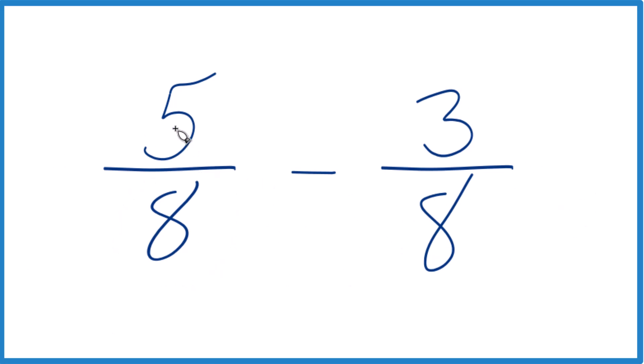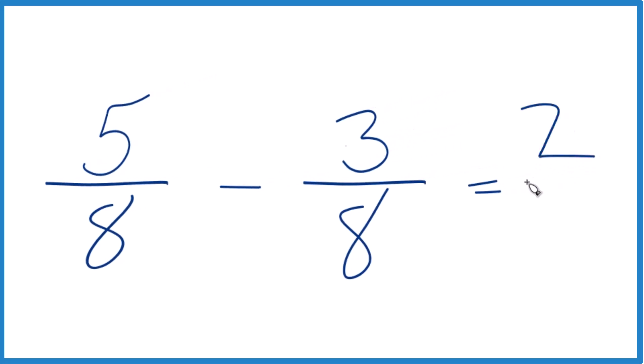If we have a common denominator, we just take 5 minus 3, that gives us 2, and we bring the 8 across. So we keep the denominator the same.